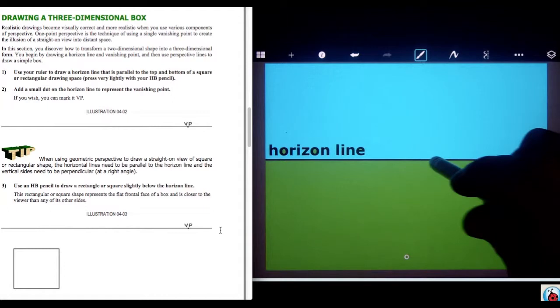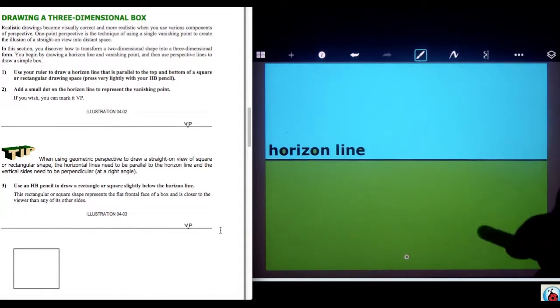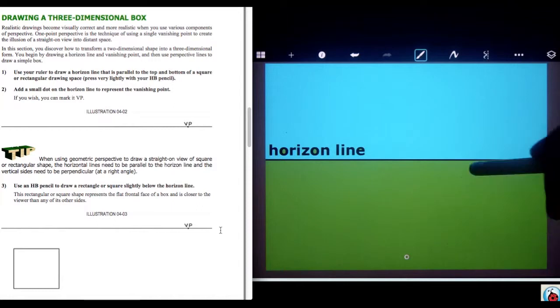We know that the earth is shaped like a sphere, so that would be the point where the earth starts to curve. The horizon line is really noticeable if you're at the beach and you look out across the ocean. At some point you see the end of the water and you see the sky meeting it.